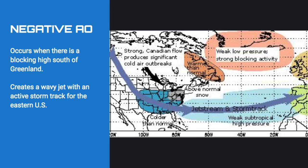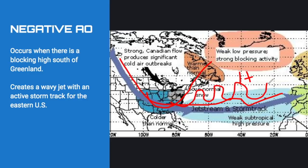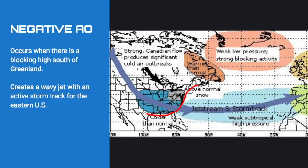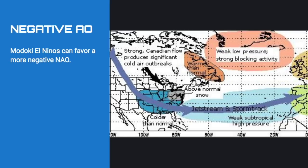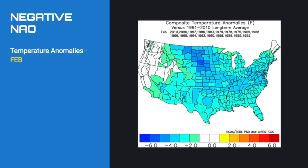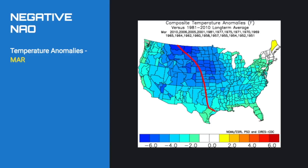The next factor is the North Atlantic Oscillation, which measures high and low pressure in the North Atlantic. When you get lots of blocking high south of Greenland, you can get a negative NAO — and Modoki El Niños can favor that. This creates a wavy jet stream pattern with an active storm track that sometimes slides up along the coast, which is good for east coast snow lovers. Looking at historical negative NAO years in December, January, February, and March, it's usually colder for the east half with more precipitation along the coast when the storms line up.